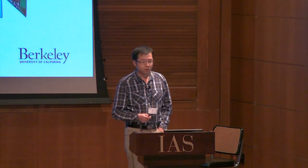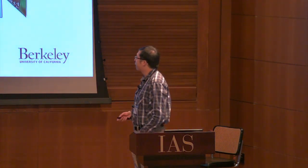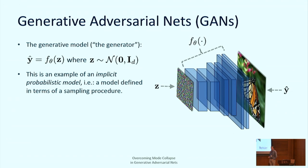Let's start with GANs. GANs are a very popular class of deep generative models, which is an example of an implicit probabilistic model — a model where you define it in terms of the sampling procedure. In GANs, we essentially draw a random vector z from a standard Gaussian, feed that into a deterministic transformation parameterized by theta — the neural net, usually called the generator — and take its outputs as the sample from our distribution.